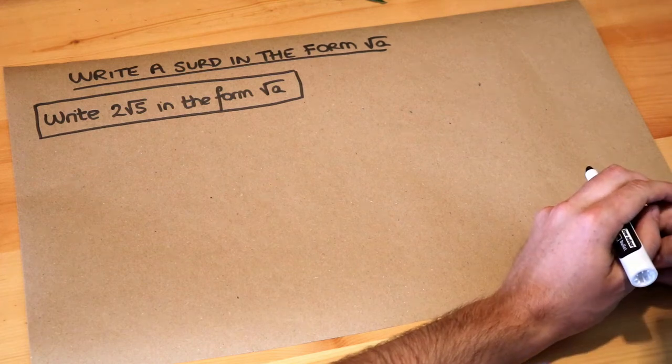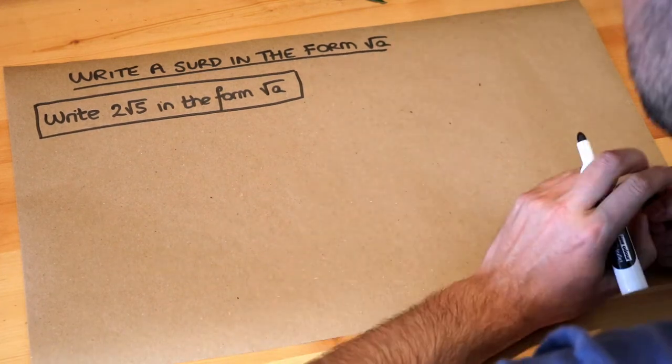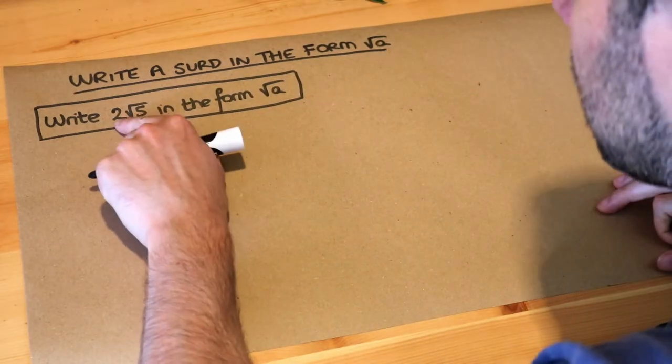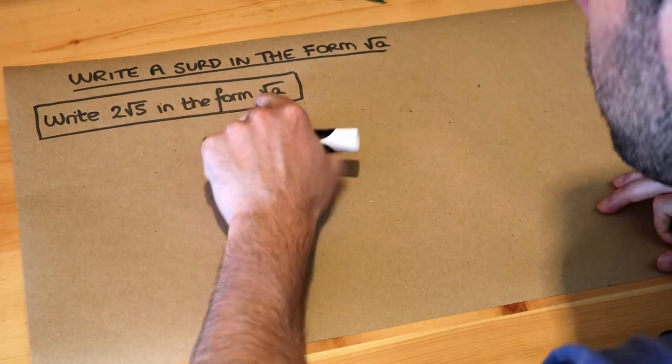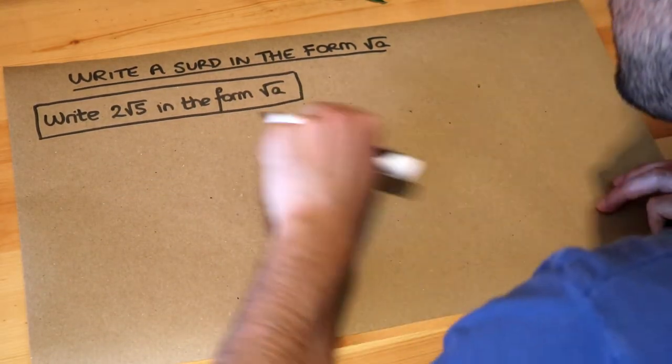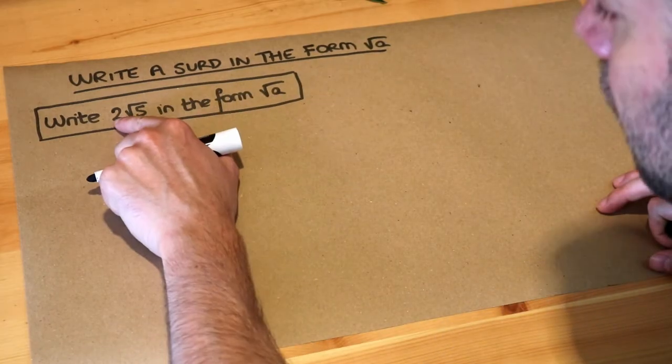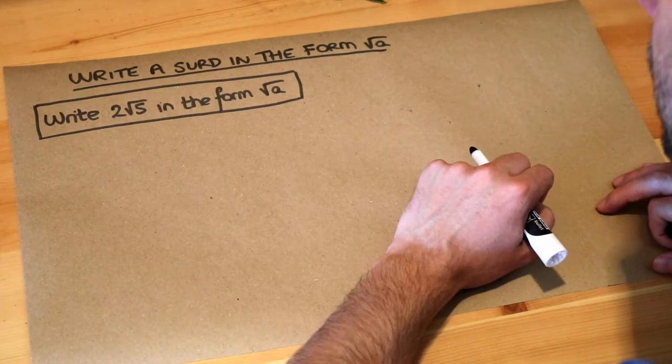Hello and welcome to Dr Frost's video on writing a surd in the form root A. So we want to write the surd 2 root 5 in the form root something, so just a single square root without anything in front of the surd.